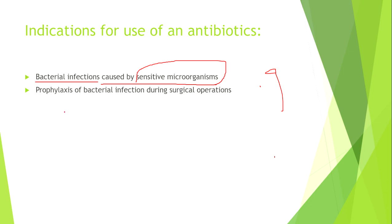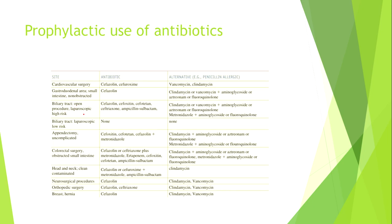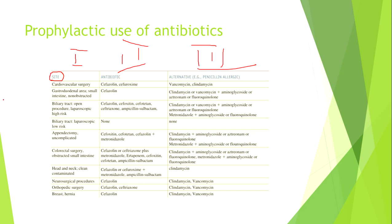Prophylactic use of antibiotics. There are three columns in this table. The site of the operation is important because some bacteria prefer certain body parts of our organism.